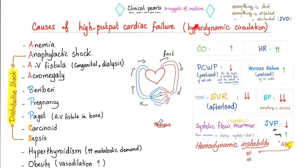What are the causes of hyperdynamic circulation or high-output cardiac failure? The A's: anemia, anaphylactic shock, A-V fistula, acromegaly. Then the B's: beriberi. Pregnancy and Paget's disease — B's and P's. Then the C's: carcinoid and sepsis. And then two hypers: hyperthyroidism and hyperdynamic states.